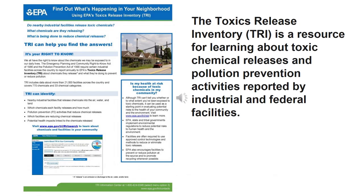The Toxics Release Inventory, created by the EPA, allows you to find out about environmental toxins in your local area. You can learn about chemical releases and pollution prevention activities reported by industrial companies and federal facilities. It's worth looking into this when moving to a new area, as it's important for your health.